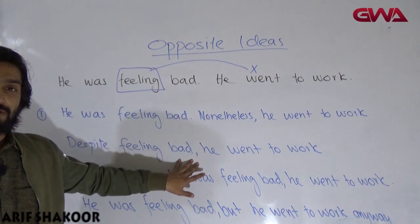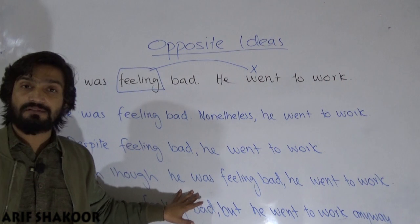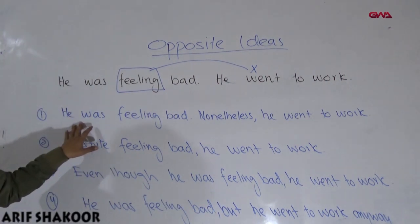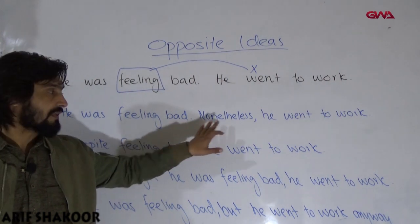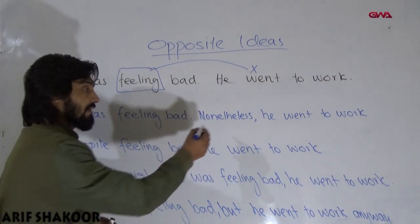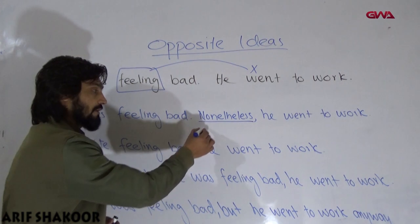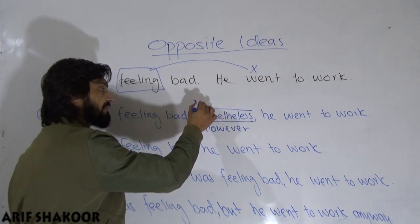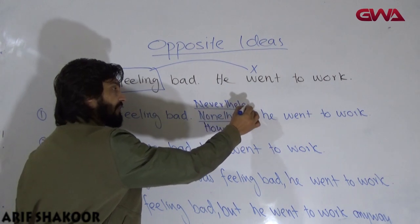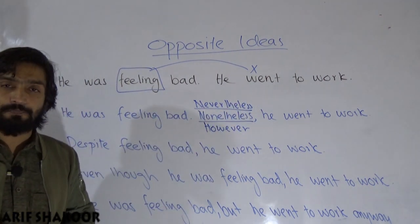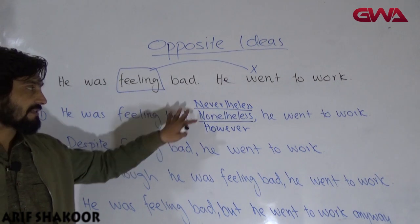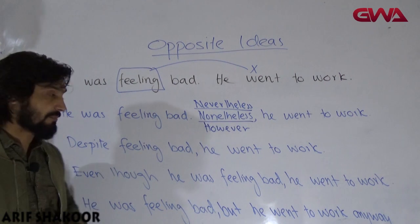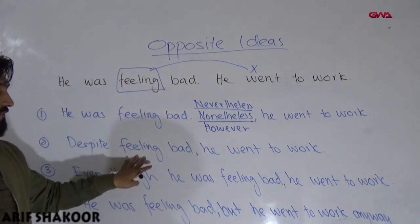Now I'm going to combine these two sentences using transitions, prepositions, coordinators, and subordinators. Using transitions: 'He was feeling bad; nonetheless, he went to work.' You can also say 'however, he went to work,' or 'nevertheless, he went to work.' All of them have the same meaning.